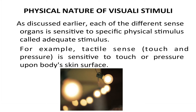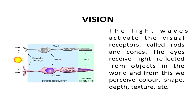Regarding the physical nature of stimuli: each sense organ is sensitive to a specific physical stimulus called the adequate stimulus. For example, the tactile sense — touch and pressure — is sensitive to touch or pressure upon the body's skin surface. Similarly, the eyes are only sensitive to photic stimulation, that is, light — electromagnetic energy. The light waves activate the visual receptors, which are called the rods and the cones.